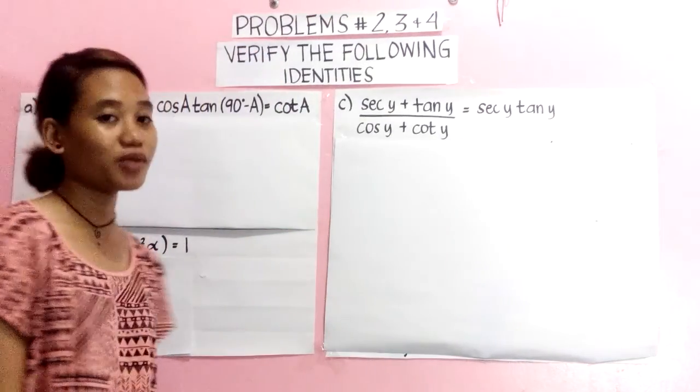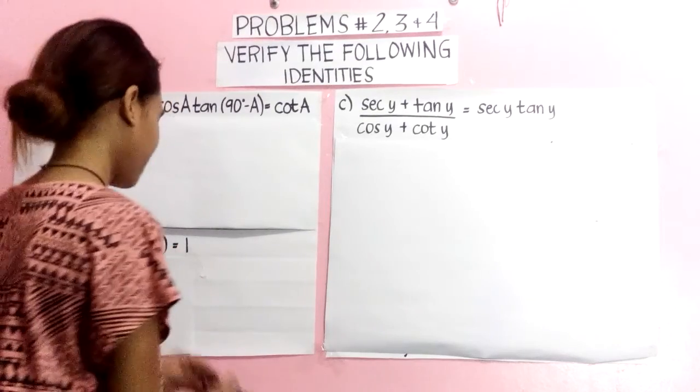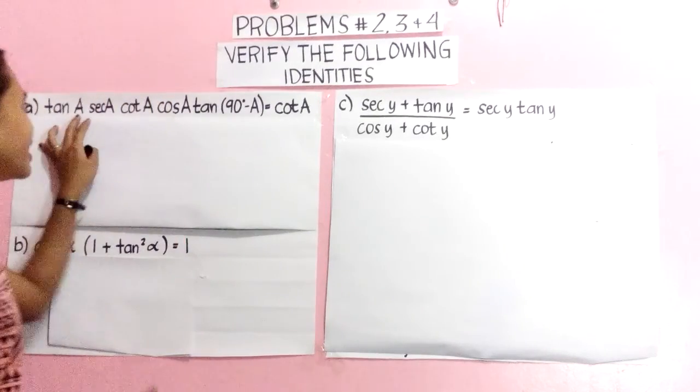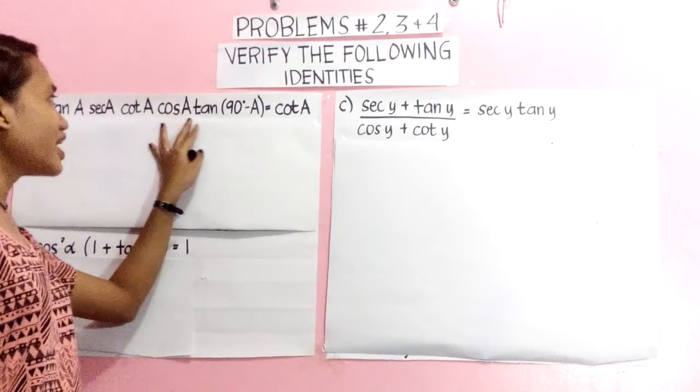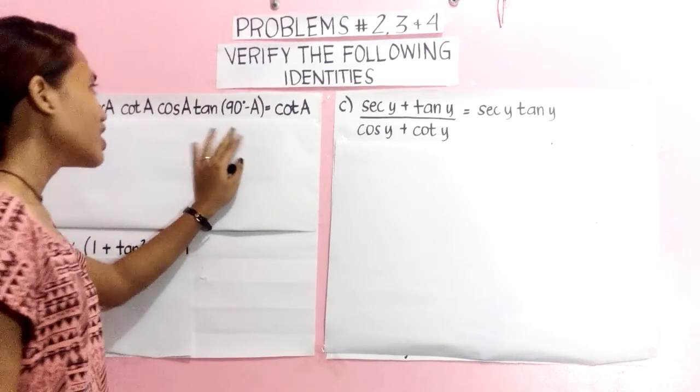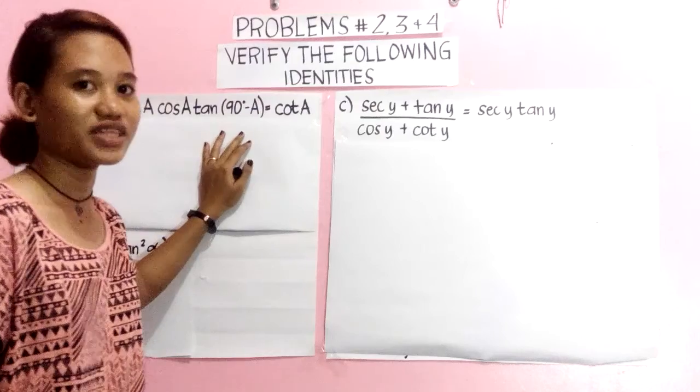I will solve problem number 2. Tan A sec A cot A cos A tan(90 degrees minus A) is equal to cot A.